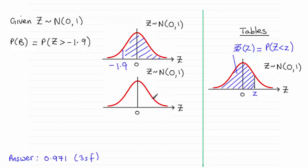I can look at 1.9 over here and work out the area to the left of 1.9, which would be this area here, and it would be exactly the same as this area. So the probability would be exactly the same.